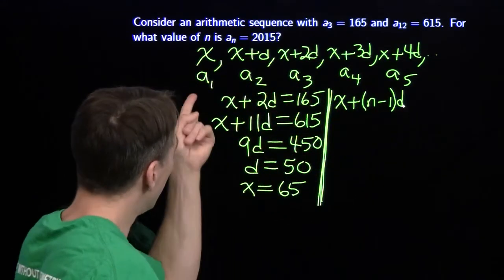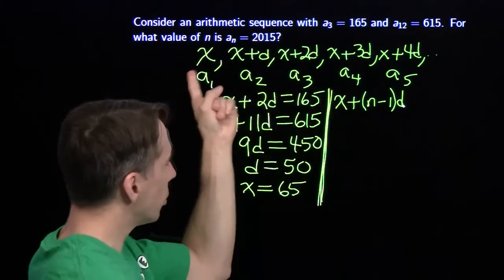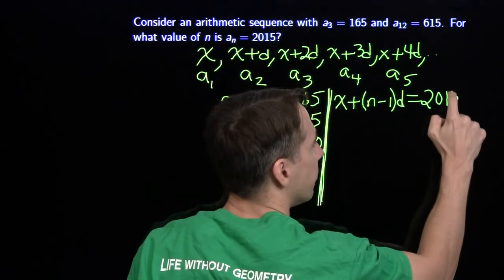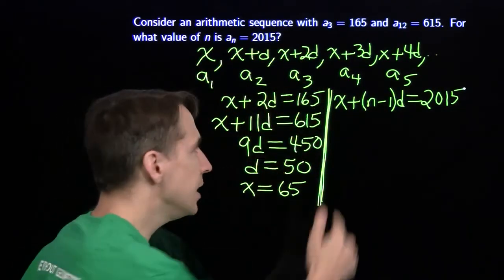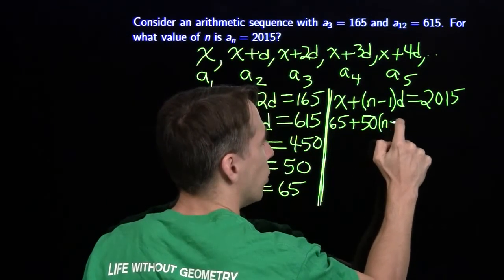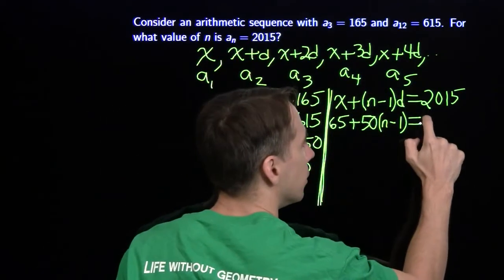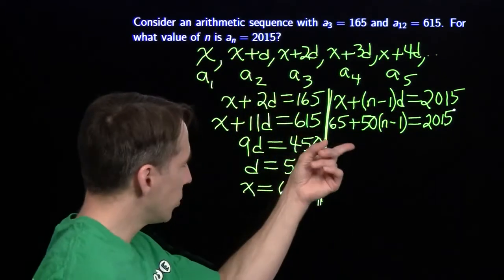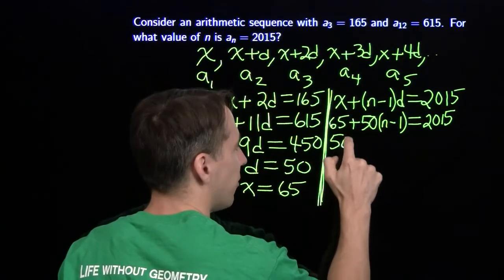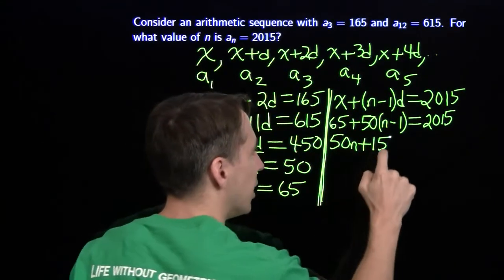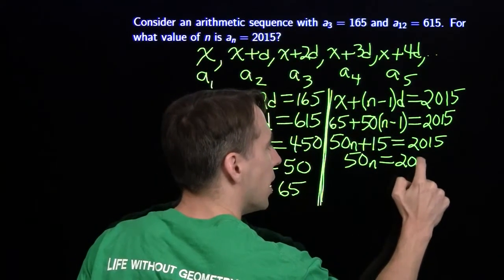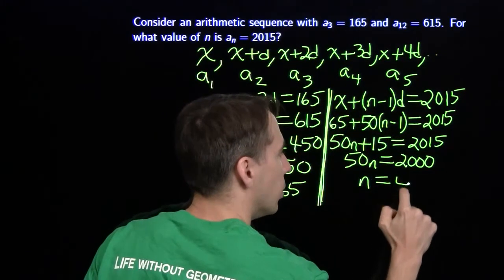If you don't see that, take a look: the first term is x, second term we take 1 step, third term 2 steps, fourth term 3 steps, nth term we take n minus 1 steps. We know the nth term is 2015. Dropping in x equals 65 and d equals 50: 65 plus 50 times (n minus 1) equals 2015. Simplifying: 50n plus 15 equals 2015. Subtract 15: 50n equals 2000. Divide by 50: n equals 40.